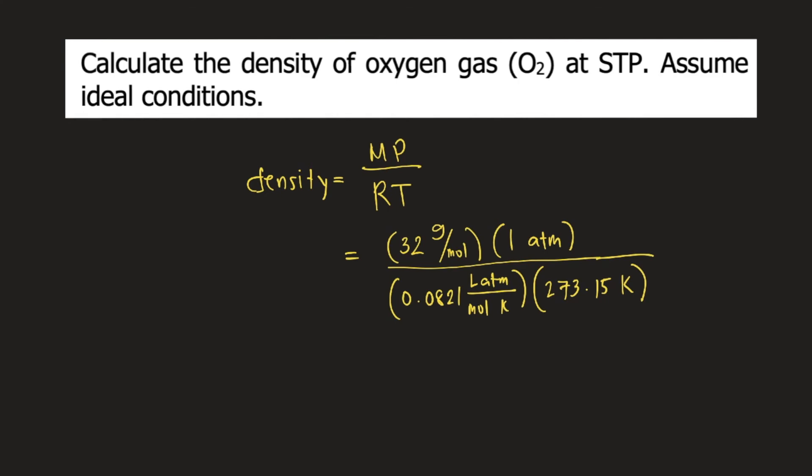Let's see how the units will cancel. Moles will cancel, atm will cancel, and Kelvin will cancel. Therefore, our unit for density is grams per liter.